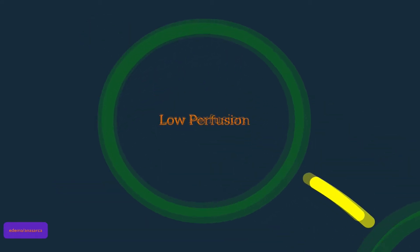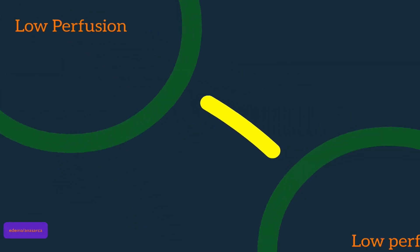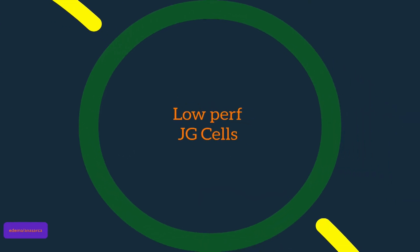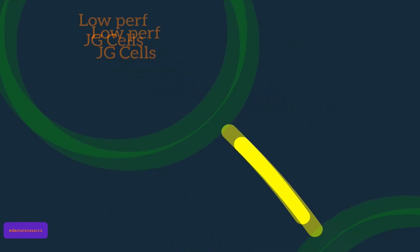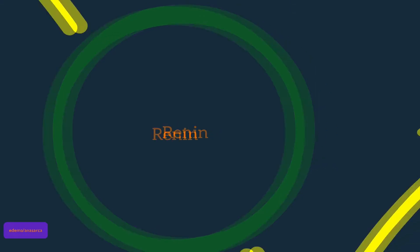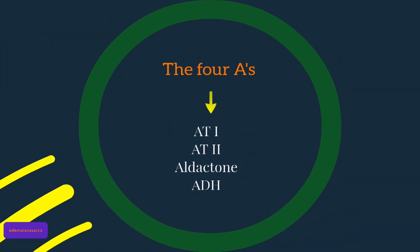The kidney is unaware of why there's low perfusion. In many of these states, it's a maladaptive process of third spacing as opposed to true intravascular volume depletion from bleeding or decreased PO intake. This subsequently leads to the production of renin and the four A's: angiotensin I, angiotensin II, aldactone, and ADH. This cascade leads to the retention of more edema — a maladaptive process — and the patient presents with more swelling.